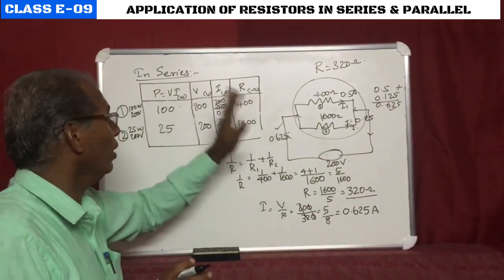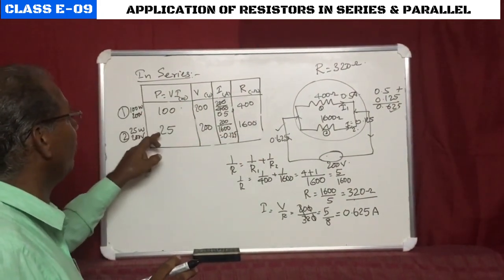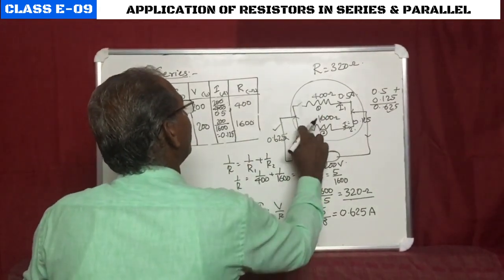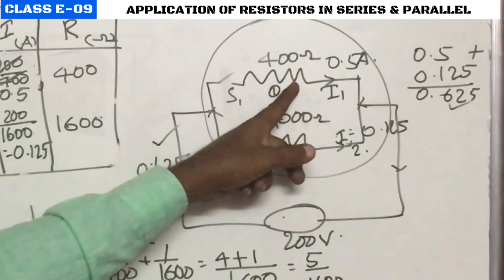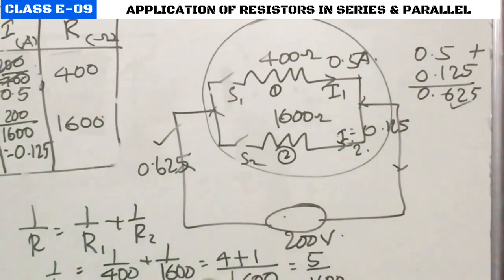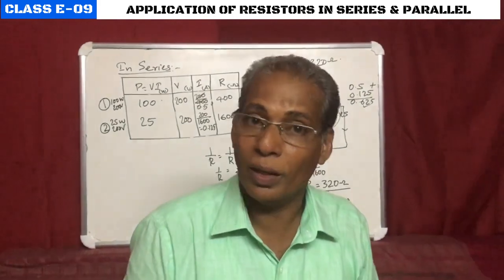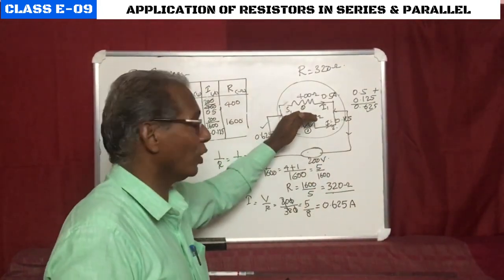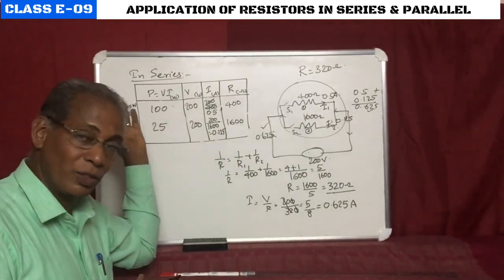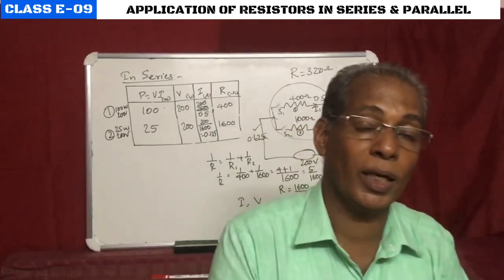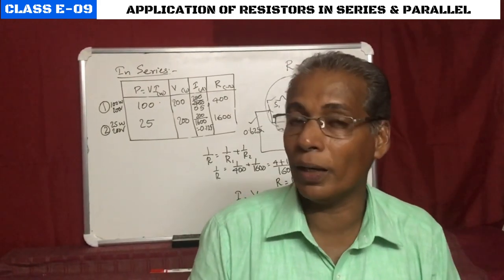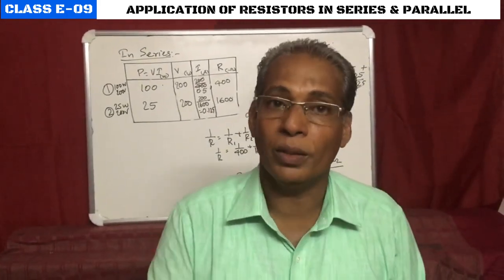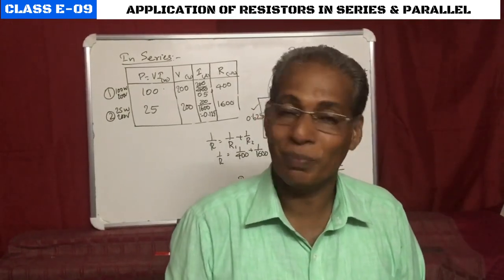In parallel, the same values we calculated individually are available — 400 ohm, 1600 ohm, 0.5A, 0.125A. An additional advantage: with individual switches on each branch, we can operate the two bulbs separately. This is exactly how household wiring works — using parallel connection of electrical equipment so that all devices receive the full available voltage of 230V and function independently.